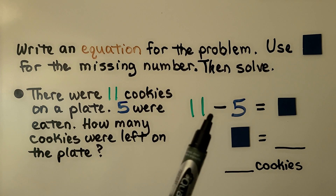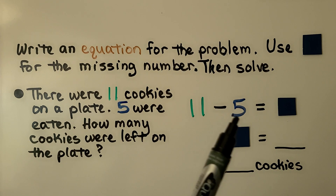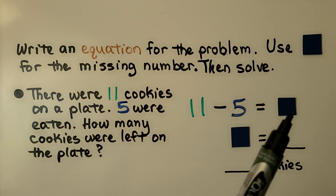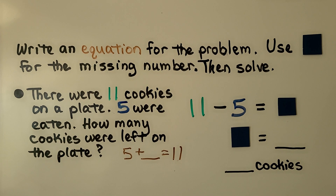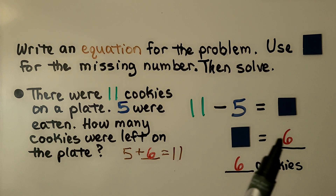There were 11 cookies on the plate. We're going to take away the five that were eaten, and it's going to equal the difference — the number of cookies left. We need to figure out 11 minus 5. We can think of a related addition sentence: five plus some number is equal to 11. If you said six, you're right. The square represents six, so there were six cookies left on the plate.